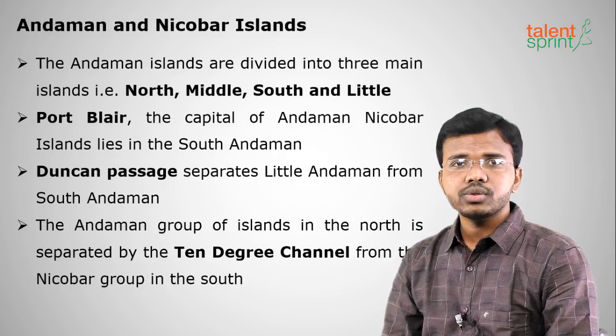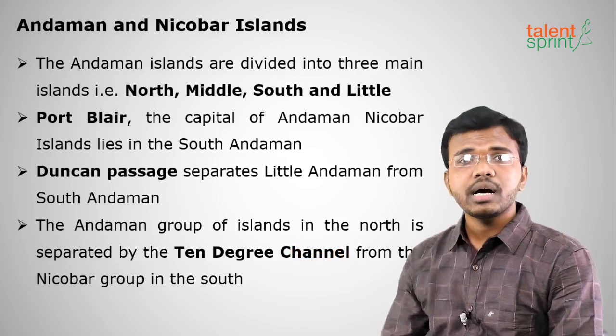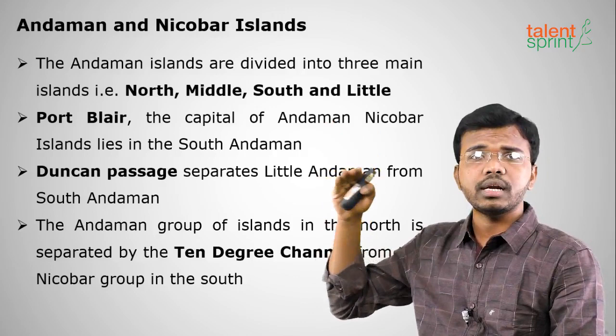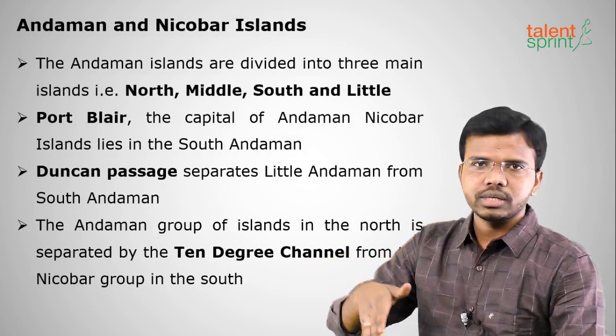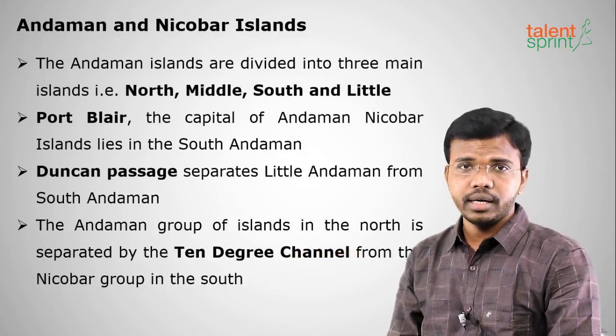The Andaman and Nicobar Islands in the Bay of Bengal are divided into four parts: North Andaman, Middle Andaman, South Andaman, and Little Andaman. South Andaman and Little Andaman are separated by the Duncan Passage — a repeated exam question. The Andaman Islands (north) and Nicobar Islands (south) are separated by the 10-Degree Channel, named because the 10-degree latitude passes through it — this was asked in UPSC Prelims.